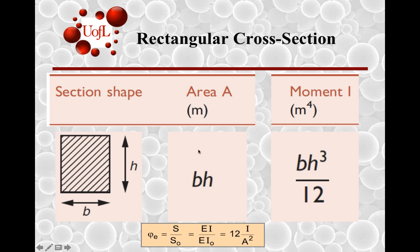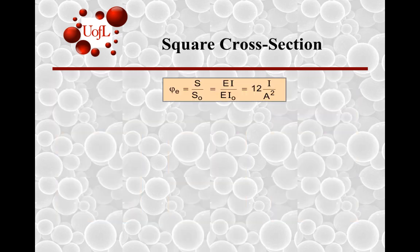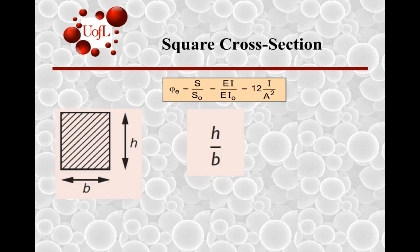As it turns out, when you do the math and insert terms for I in this equation and A in this equation, you will see that for a rectangular cross-section the shape efficiency factor is H divided by B.